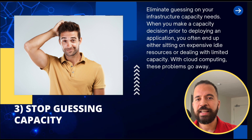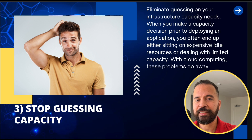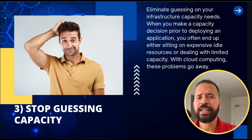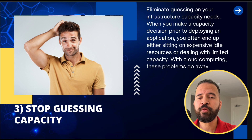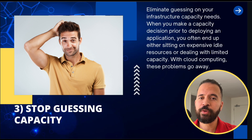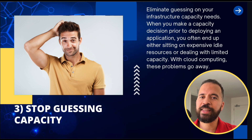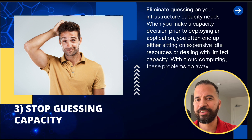In the cloud, your cloud provider — in this case AWS — has almost virtually unlimited capacity. So when you need resources, you spin them up when you need them, and when you don't, you let them go. That's the great thing about not having to guess capacity anymore.